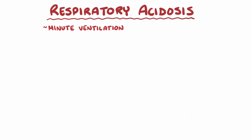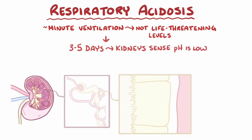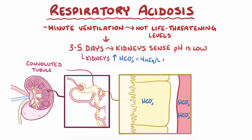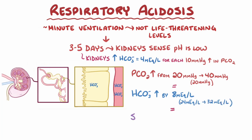Fortunately, if minute ventilation hasn't decreased to life-threatening levels, then within about 3 to 5 days the kidneys start sensing that pH is too low and step up to help correct the imbalance. More specifically, the cells of the proximal convoluted tubule start generating and reabsorbing more bicarbonate into the bloodstream. The kidneys are pretty effective in doing this, managing to increase bicarbonate concentration about 4 mEq per liter for each 10 mmHg increase in pCO2. So if pCO2 went up by 20 mmHg, plasma bicarbonate would increase by 8 mEq per liter — from 24 to 32 mEq per liter — leading to a substantial increase in pH, bringing it closer to its normal range again.